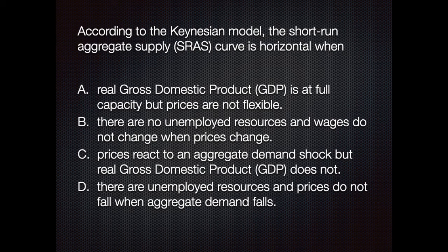According to the Keynesian model, the short-run aggregate supply curve is horizontal when: A, real gross domestic product is at full capacity but prices are not flexible; B, there are no unemployed resources and wages do not change when prices change; C, prices react to an aggregate demand shock but real gross domestic product does not; or D, there are unemployed resources and prices do not fall when aggregate demand falls. The answer is D — there are unemployed resources and prices do not fall when aggregate demand falls.